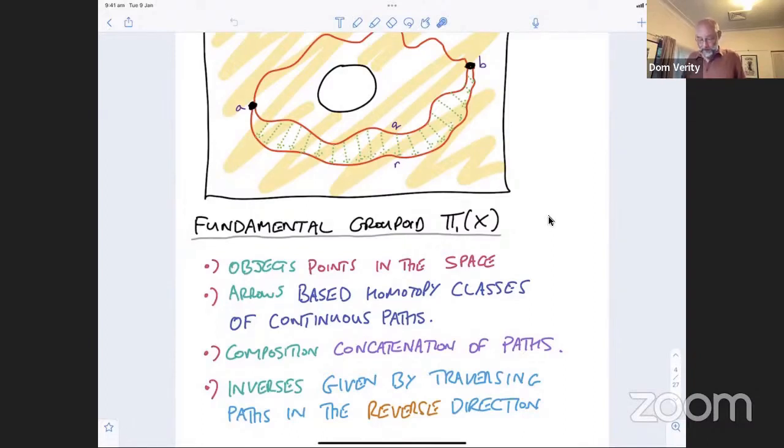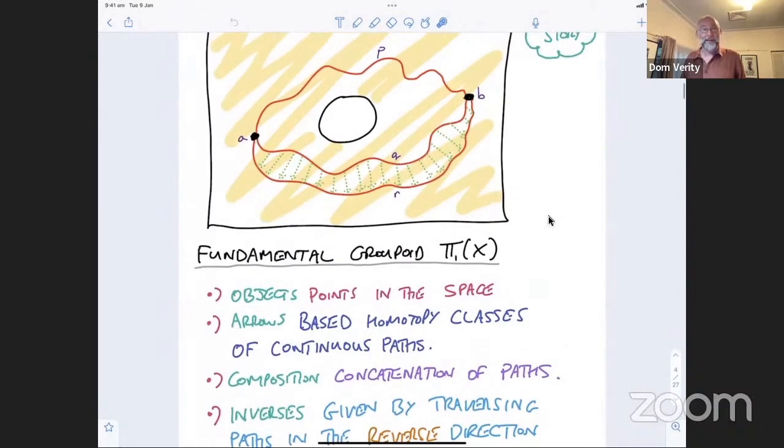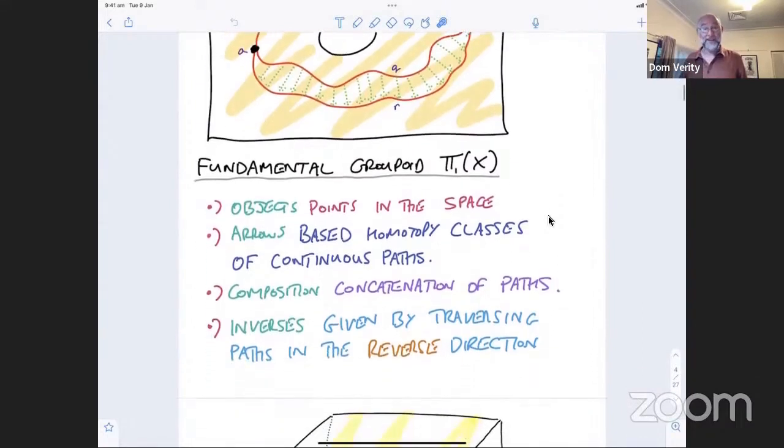And then finally, one thing that we obtain in the fundamental groupoid is that we discover that it's actually a groupoid and not just a category, essentially because every single arrow in this category has an inverse because when I look at a path, I can traverse it in either direction. So the path P, I can go from A to B, but I can also go in the reverse direction from B back to A.